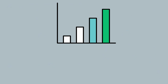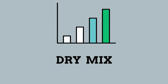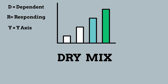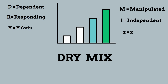When graphing the independent and dependent variables, you can remember which axis they go on by using DRY MIX. The D stands for dependent variable, the R stands for responding variable, and the Y stands for y-axis. The M of MIX stands for manipulated, the I stands for independent, and the X stands for x-axis.